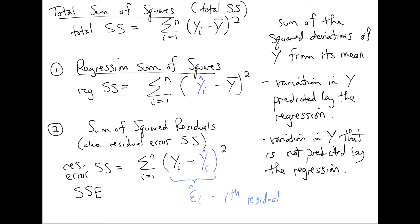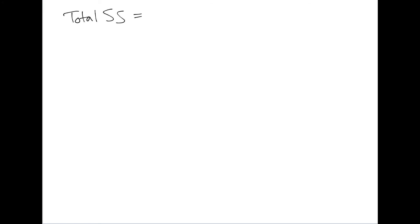Our key result that allows us to say something about our regression's quality is that the total sum of squares is equal to the sum of the two: the regression sum of squares plus the residual error sum of squares, or SSE.